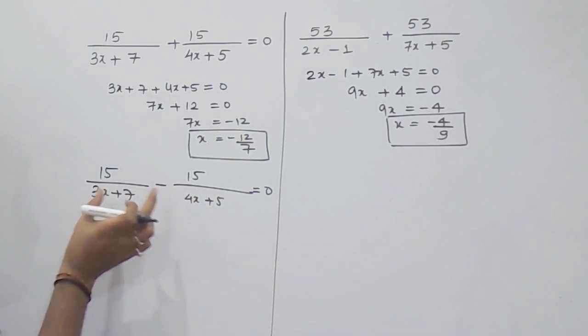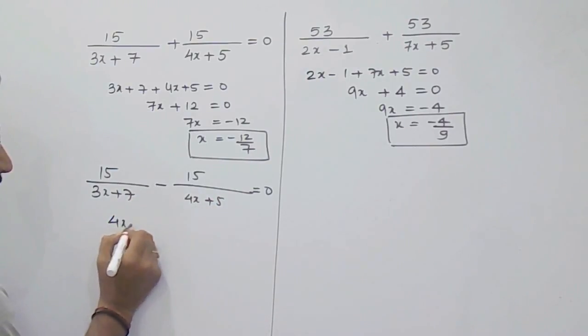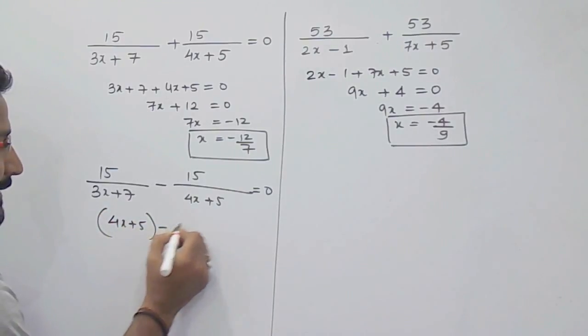That is, you have to subtract this 3x plus 7 from 4x plus 5. So you have to write this equation first: that is 4x plus 5 minus 3x plus 7 equals 0.